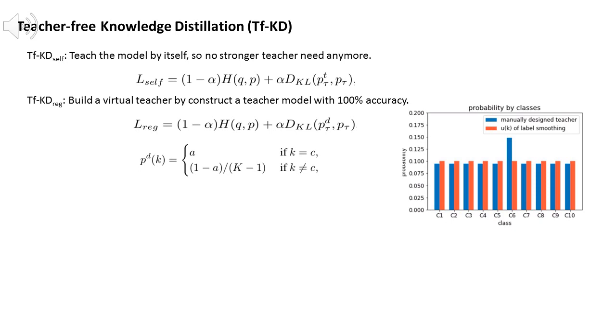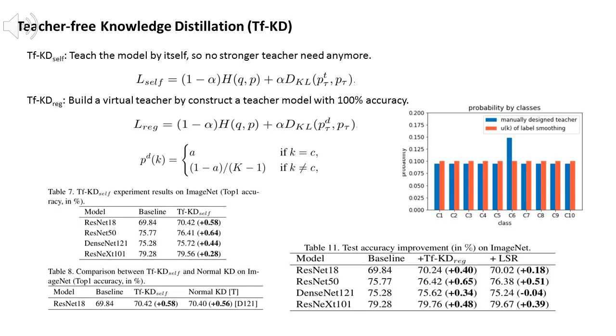We test the two methods on ImageNet. Both the two implementations achieved comparable results with that of stronger teacher, and the second one is much better than label smoothing regularization.